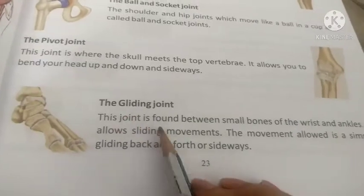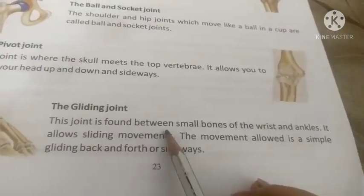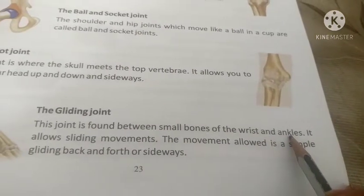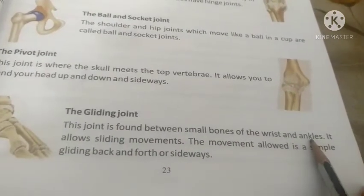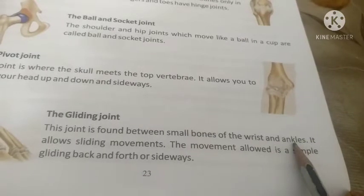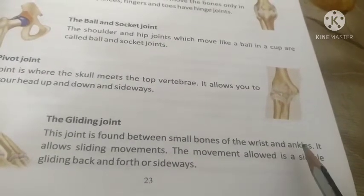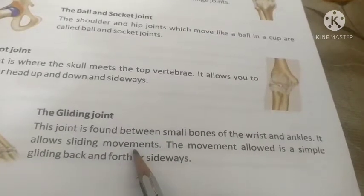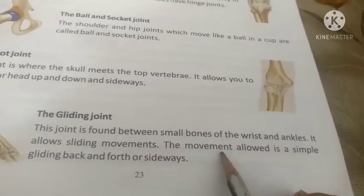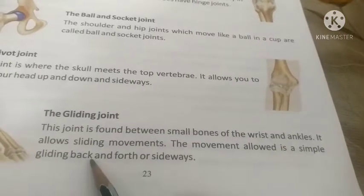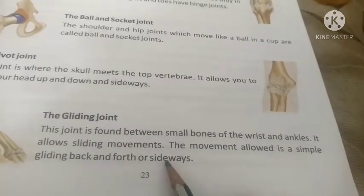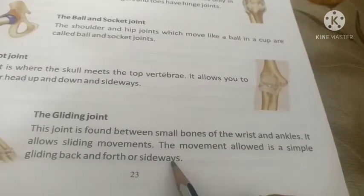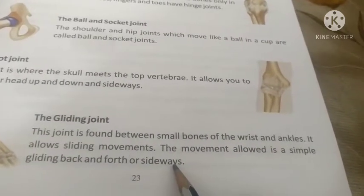The gliding joint is found between the small bones of the wrist and the ankle. These are small joints, like our wrist and ankle joints. It allows sliding movement — simple gliding back and forth and sideways.